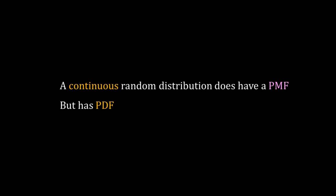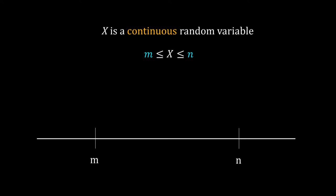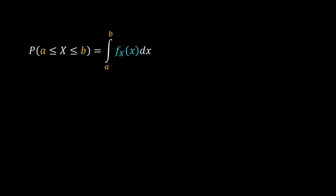Continuous random variables do not have a probability mass function; they have a probability density function, or PDF. X is a continuous random variable in the interval m to n. A and b are in this interval, and we want to calculate the probability that X lies in the interval a to b. This probability can be nonzero.